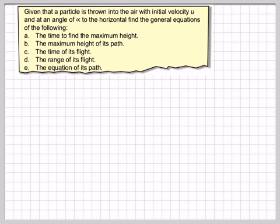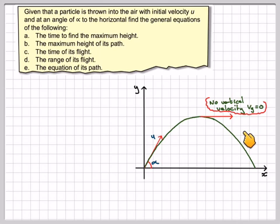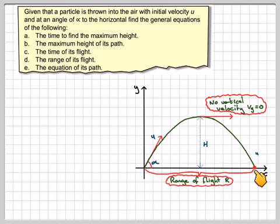It's useful to know these things in their general form with no numbers. Let's draw a diagram. We've got initial velocity u and angle alpha to the horizontal, so this will be the path of the parabola. There's no vertical velocity at the maximum height, which will give the maximum height. And here the vertical height will be zero, which gives the time of flight, and therefore we can find the range. We've got gravity acting downwards.